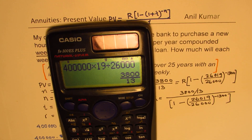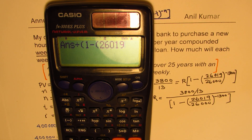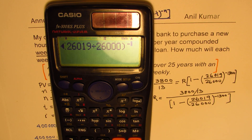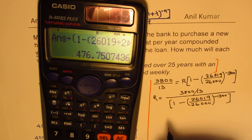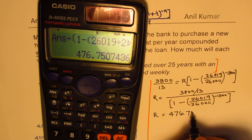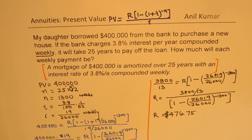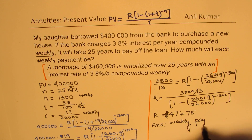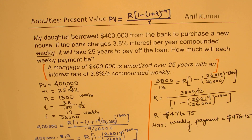We already have the numerator in the calculator. Using brackets: 1 minus [(26,019/26,000) to the power of minus 1,300], then close the bracket. Our value of R equals $476.75. All dollar values should be rounded to cents, so the weekly payment is $476.75.